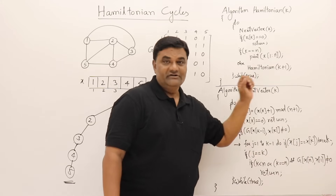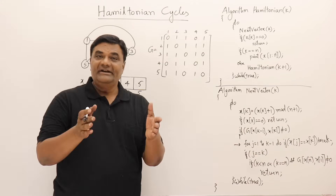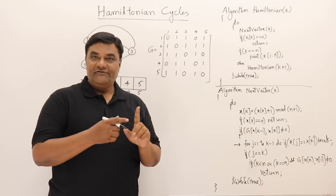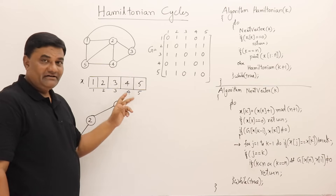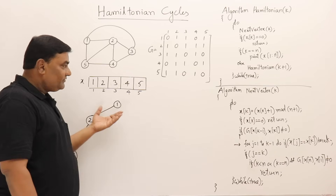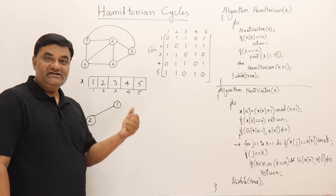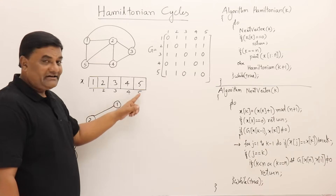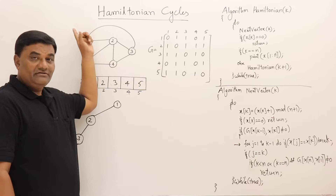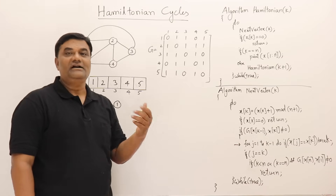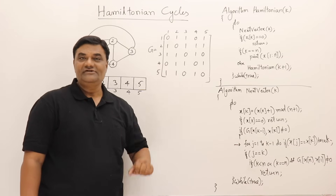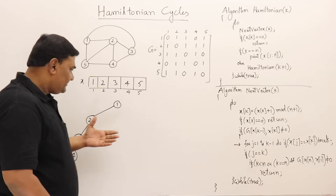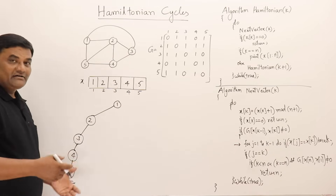To summarize the bounding function conditions: first, you should not take a duplicate vertex; second, whenever you take any vertex there should be an edge from the previous vertex; third, if you are on the last vertex then there should be an edge to the first vertex. If all three conditions hold, it is a valid answer.